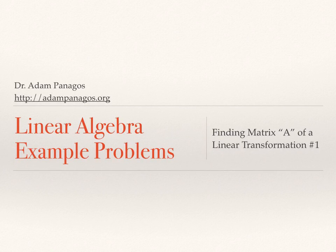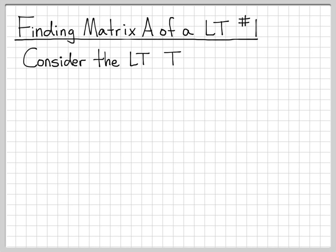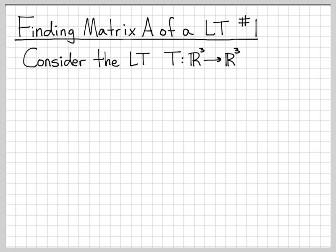In this video we're going to work with a linear transformation, and since it's a linear transformation, we can find a matrix representation of it. The linear transformation we're going to work with is denoted T, which takes us from R³ to R³. So the inputs are vectors in R³ and the outputs are also vectors in R³.